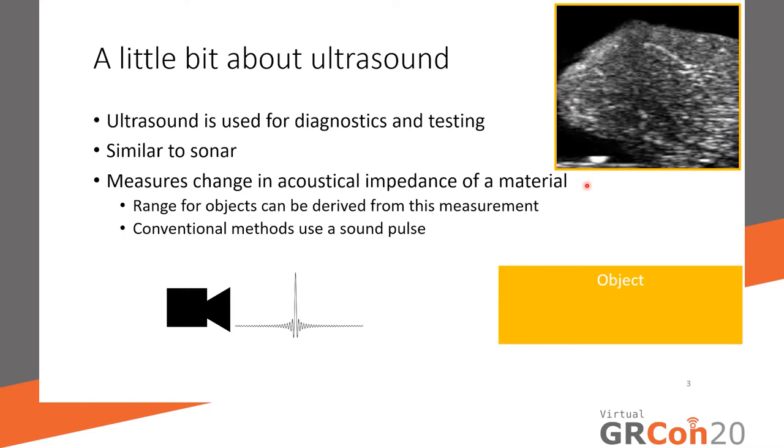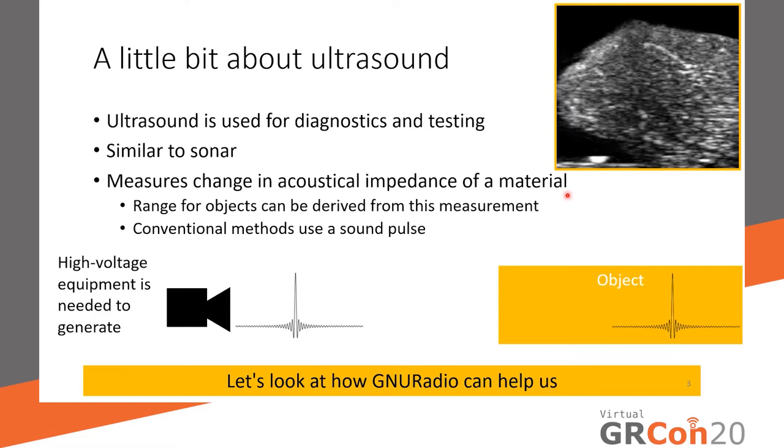Conventional ultrasound uses sound pulses to measure the impedance. The way that works is the transducer will transmit an impulse. As with wave theory, some of the impulse will be reflected back, and some will propagate through the material. Based on the timing of that impulse, one can compute the range of the object. The issue with impulses is that to generate those, it requires high voltage equipment, which then requires more complex shielding for your receiver technology. So what we would like to do is design a different type of waveform other than an impulse that would overcome those limitations.